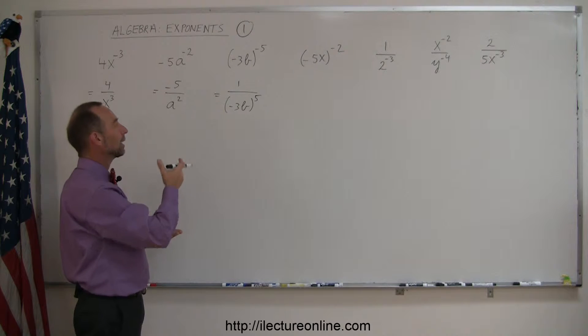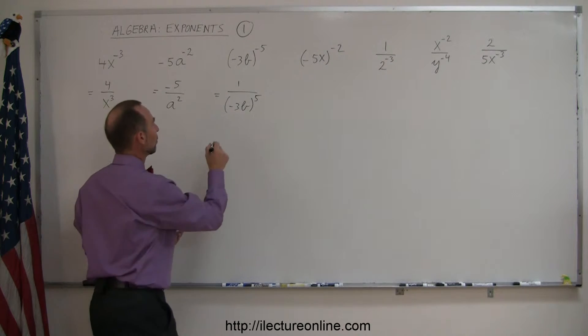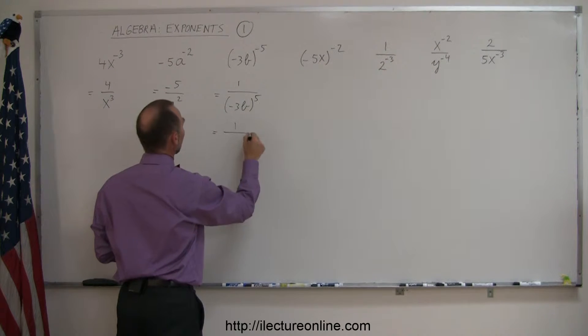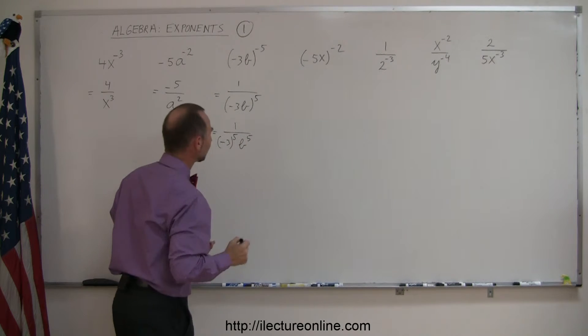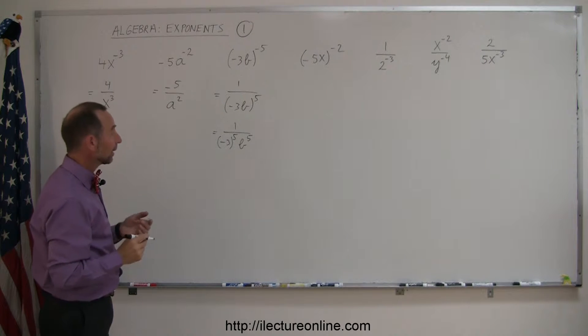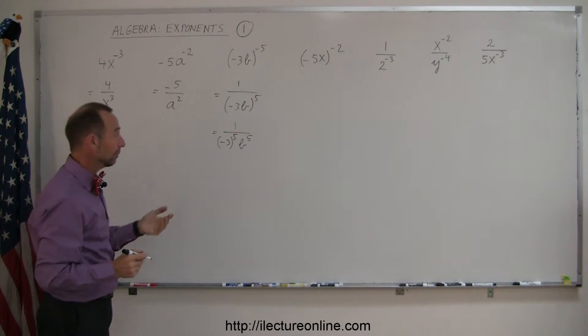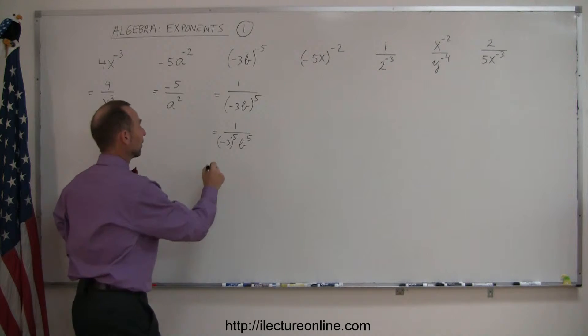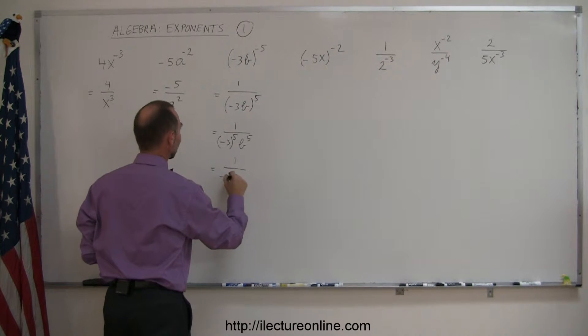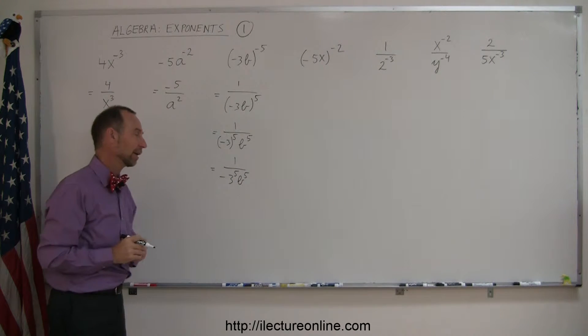And yes, we could apply that to what's inside, so this can be written as 1 over negative 3 to the 5th power times b to the 5th power. And because a negative 1 to the 5th power is still a negative 1, because that's an odd power, we can say this is equal to 1 over negative 3 to the 5th power, b to the 5th power, and that's as much as we can simplify it.